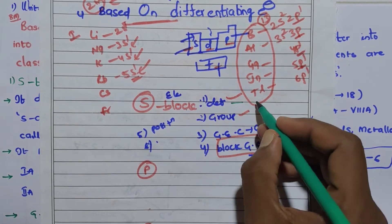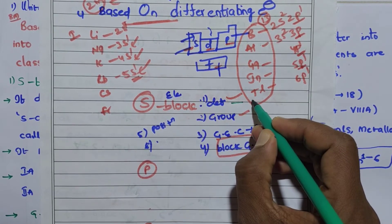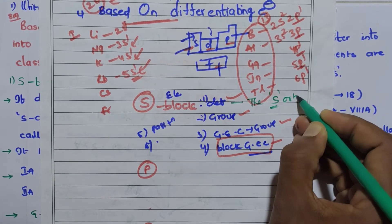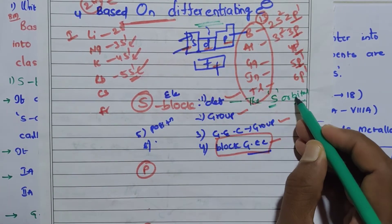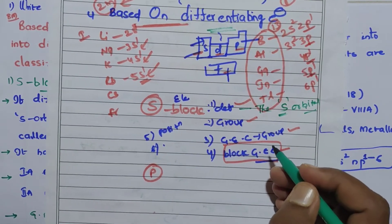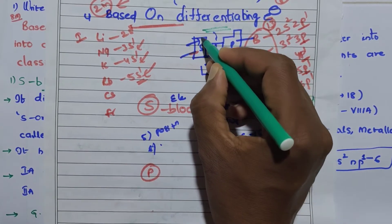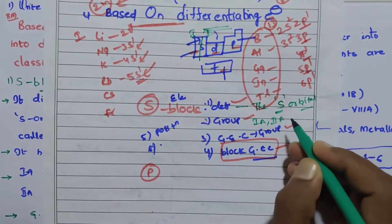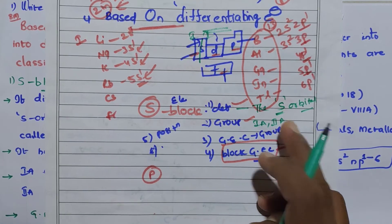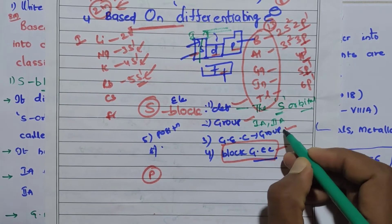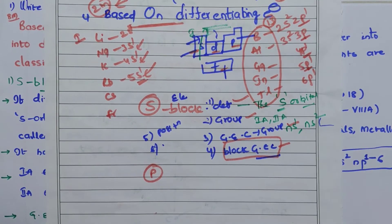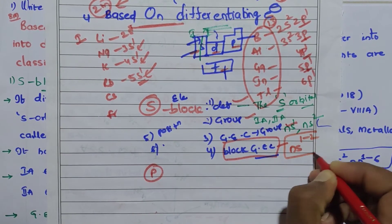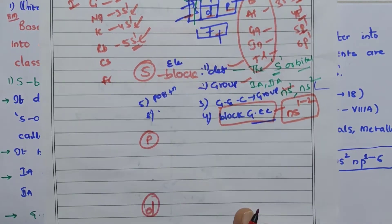Now we will talk about s block. The definition of s block elements is: the elements in which the differentiating electron enters into the s orbital are called s block elements. There are two groups: group 1A (alkali metals) and group 2A (alkaline earth metals). The general electronic configuration is ns1 for group 1 and ns2 for group 2 — overall ns1-2.